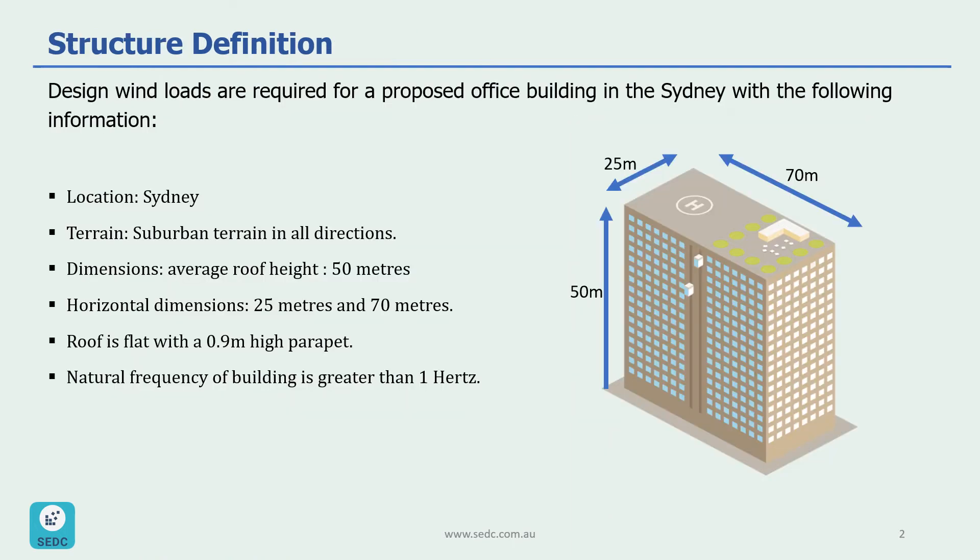Let's define our building that we want to calculate the design wind load for. This building is an office building located in Sydney and it's 50 meters high. The horizontal dimensions of this building are 25 meters by 70 meters and the natural frequency of this building is greater than one hertz. The roof is flat with a 0.9 meter high parapet. Also, this building is located in a suburban terrain area in all directions.